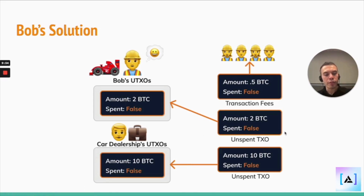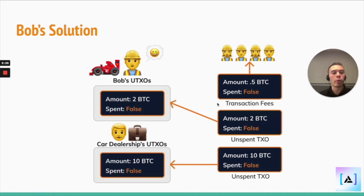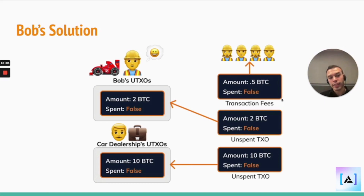One output worth 2 Bitcoin — Bob's change — goes back to him. And one output worth 0.5 Bitcoin goes directly as transaction fees.